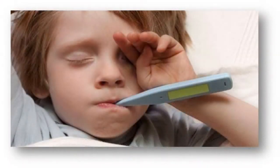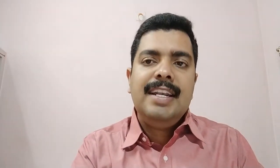Falling sick is dependent on eating ice cream. Eating ice cream is the independent variable — it's not dependent on anything. As a result, maybe you will fall sick, maybe you will not fall sick. So the independent variable is eating ice cream, and the dependent variable is falling sick.